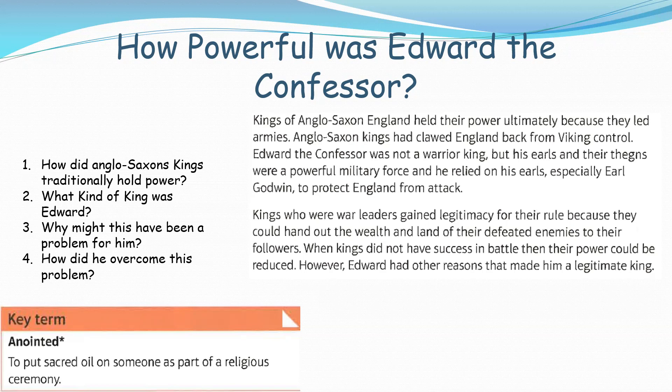So he wasn't very good on the battlefield - that's where he got his name, Edward the Confessor. What actually happened in the end was he relied upon his earls, especially Earl Godwin. He relied very much upon his earls to do his job for him, and he obviously made the ultimate decisions when it came to the fighting. His earls and their thanes - who were essentially his knights, his crack troops, the best fighters - he relied upon them.